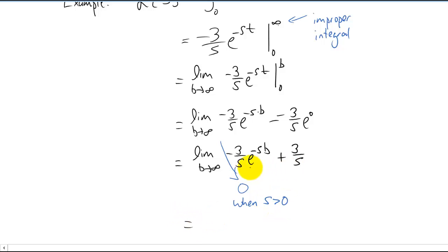So last step, I'm just copying down what we have left. We just have three over s. So the Laplace transform of the function three is just three over s as long as s is a number that's bigger than zero.